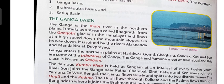Ganga enters the northern plains at Haridwar. Gomti, Ghagara, Gandhak, Kosi, and Son are some of the tributaries of Ganga. So Haridwar is the place where river Ganga enters into the northern plains. The tributaries of Ganga are Ghagara, Gomti, Gandhak, Kosi, and Son.